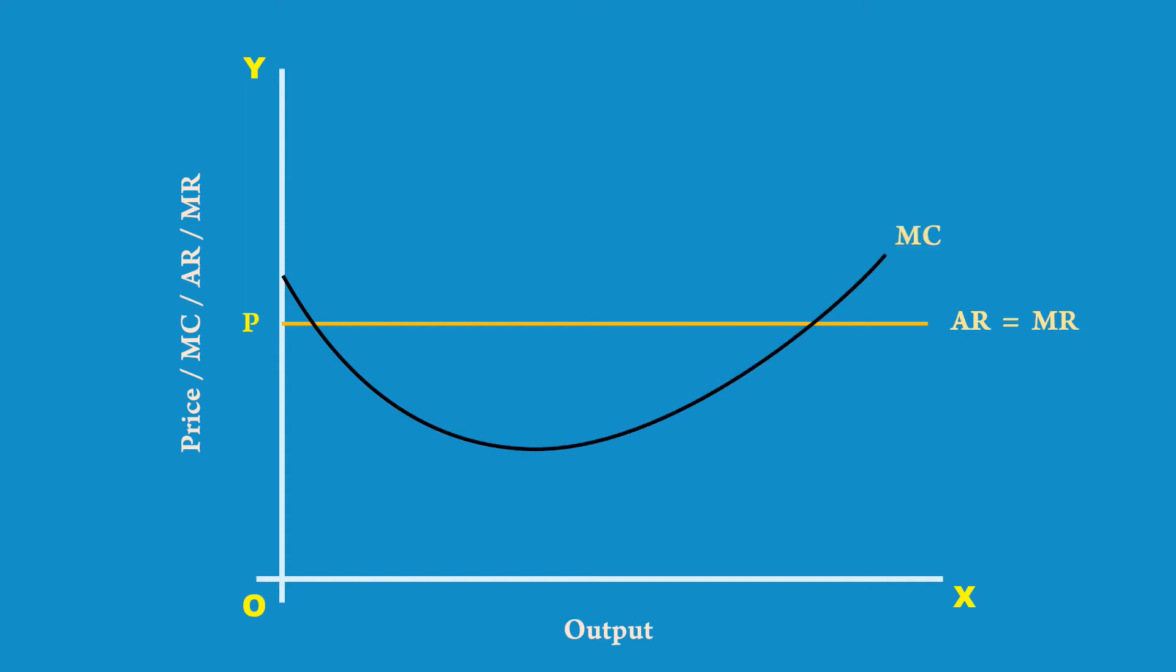Its marginal cost curve is MC. Vertical distance between the X axis and the marginal cost curve represents the marginal cost incurred by the producer.